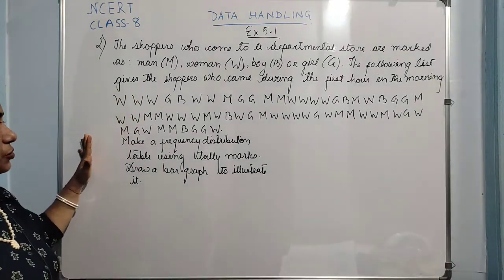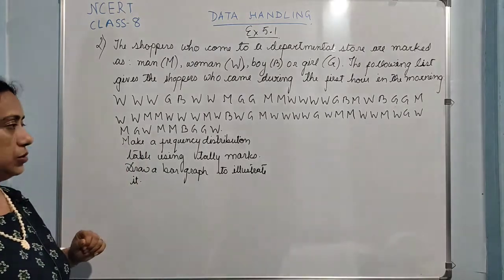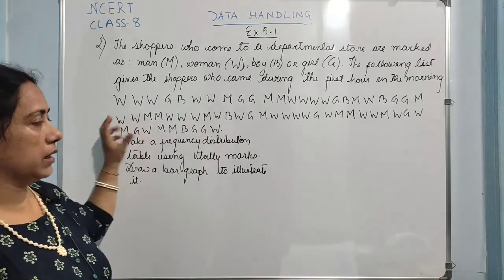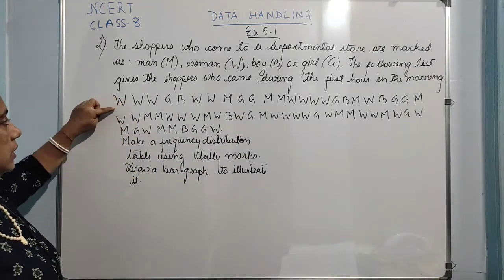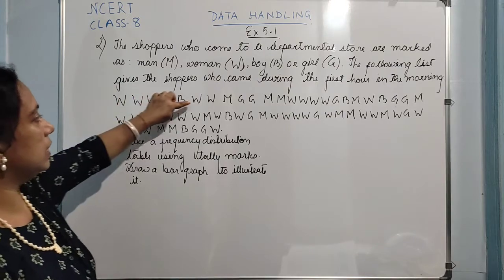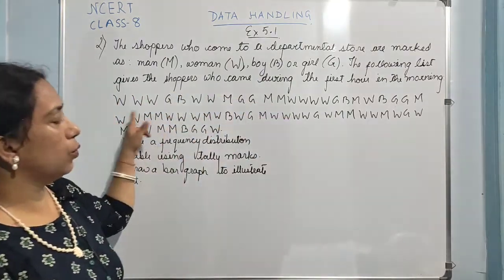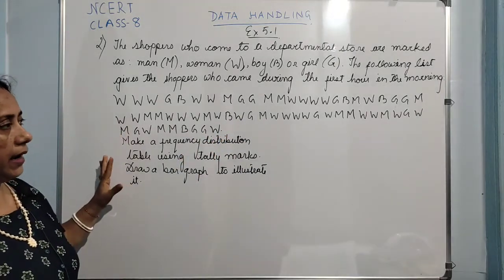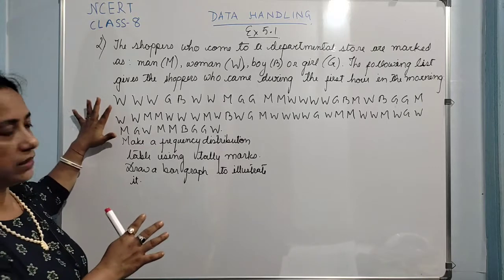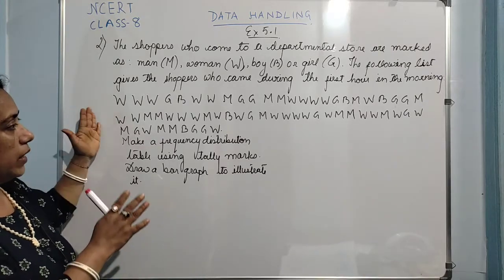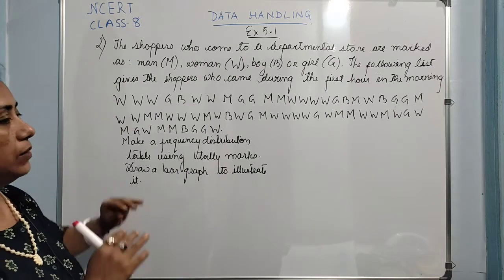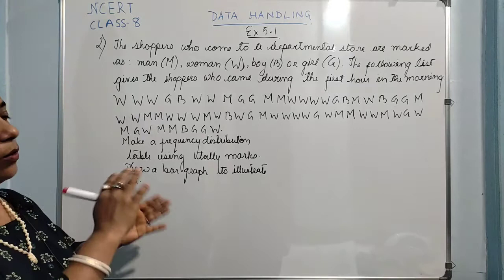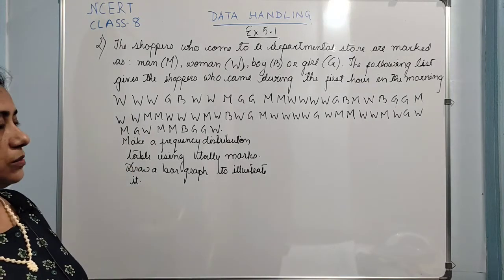For this particular distribution we have to make a frequency distribution. This is data which is unorganized, and if we go on counting — women first, here came 3, then here again women are there — it will take a lot of time. That is why this type of data, this is raw data. So when we need to organize the data, we make a frequency distribution table. Here the raw data is being organized.